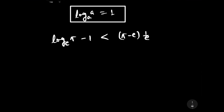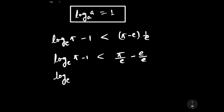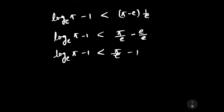Further, we can write log_e(pi) − 1 < pi/e − 1. The minus 1 cancels on both sides by adding 1 to each side. Therefore, log_e(pi) < pi/e.